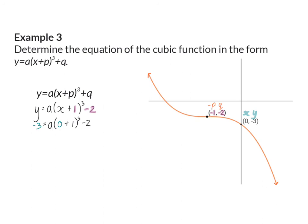If we simplify this we will end with minus 1 equals 1a, so a is minus 1. All that's left to do is substitute a with minus 1 and then our equation will already be in the form that they asked us to give it in. So we'll have minus 1 times bracket x plus 1 cubed minus 2.